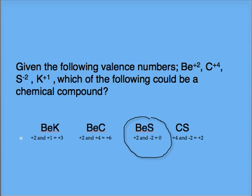Given the following elements and their valence numbers, which of the following is a compound that we would expect to see? Beryllium and potassium have valences of positive two and positive one, for a total of positive three. This is a reaction that is not likely to proceed.